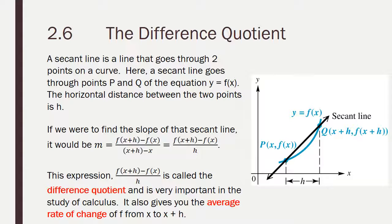Simplifying that, really just the denominator there, the two x's will go away, and you're left with f of x plus h minus f of x over h. This expression is called the difference quotient, and it is very important in the study of calculus. It also gives you the average rate of change of the function f from x to x plus h.